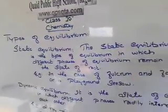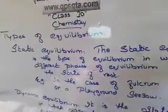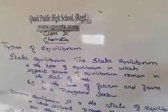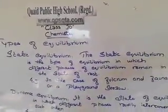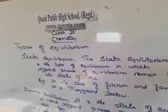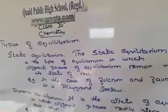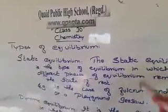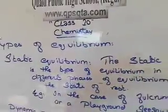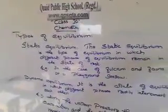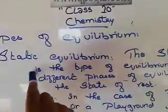Bismillahirrahmanirrahim, Assalamu alaikum dear viewers and friends. Today we are going to study from your Grade 10 chemistry books. In the last class we studied the equilibrium position — the position said to be the equilibrium position is known as equilibrium. Now we have the types of equilibrium, and there are two types of equilibrium which we will study in depth.